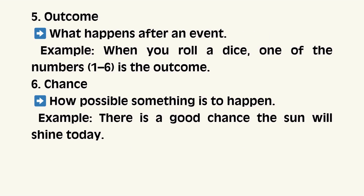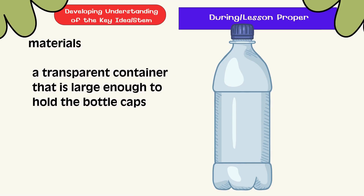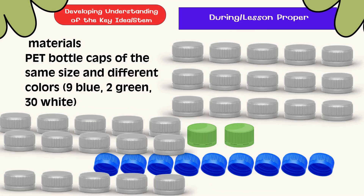Developing understanding of the key idea. Materials: a transparent container that is large enough to hold the bottle cups; pet bottle cups of the same size and different colors — 9 blue, 2 green, and 30 white.